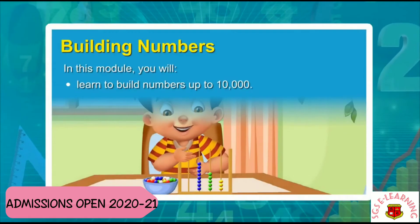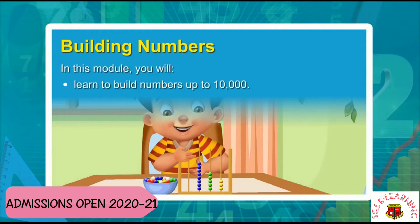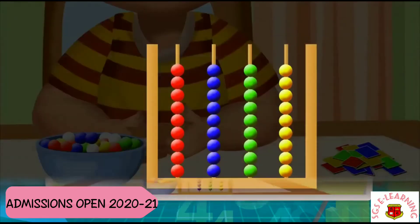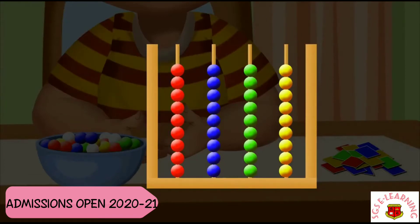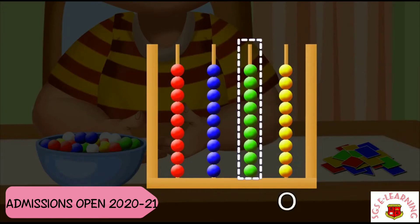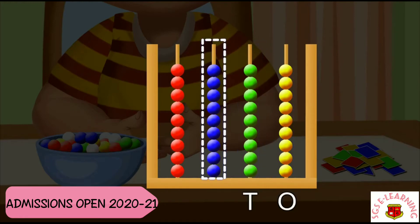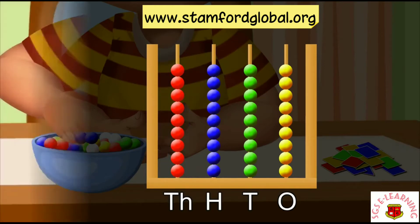Building numbers. In this module, you will learn to build numbers up to 10,000. This is an abacus. It has four spikes. The rightmost spike represents the ones place, the second spike from the right represents the tens place, the third spike from the right represents the hundreds place, and the leftmost spike represents the thousands place.